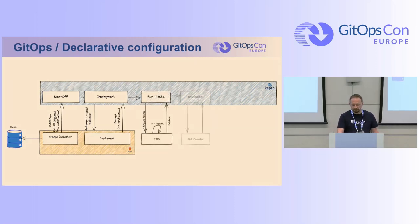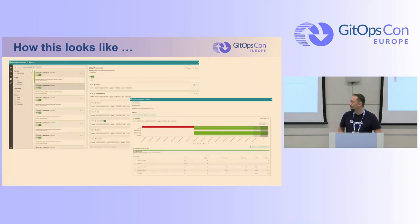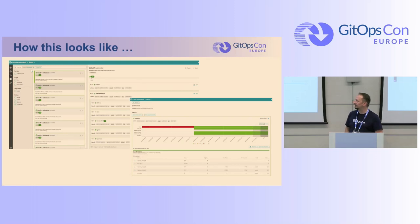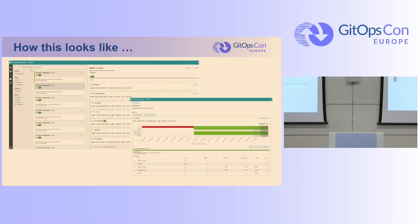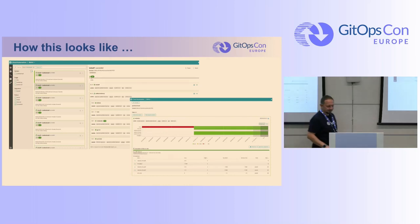In further consequence, Captain can run tests and evaluate the results. Last but not least, Captain can raise a pull request for the next stage. In the demo, on the left side we see the execution of the sequence itself: a kickoff step, an artifact delivery step, testing, an evaluation with evaluation results, and finally the promotion to the next stage.